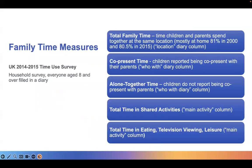We drew on the two latest time use surveys as we were interested in conducting a comparison over time. These were household surveys, meaning they collected diaries from everyone aged eight and over in the household. We started by matching the diaries of different family members, and constructed five different measures of family time. An overall measure captured the time that parents and children spent together at the same location, constructed solely by looking at the location diary column.